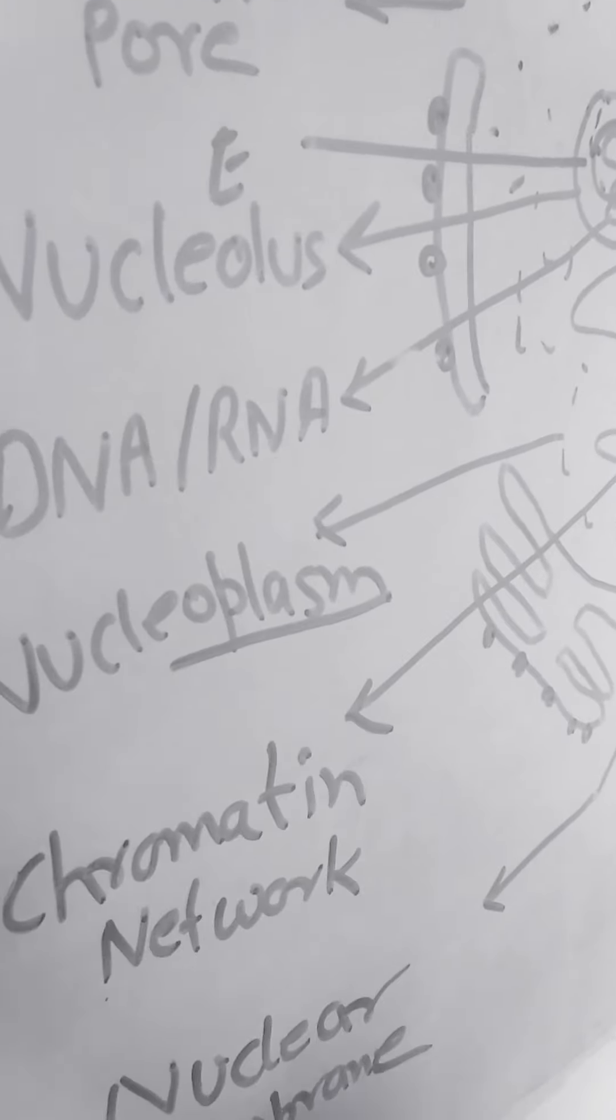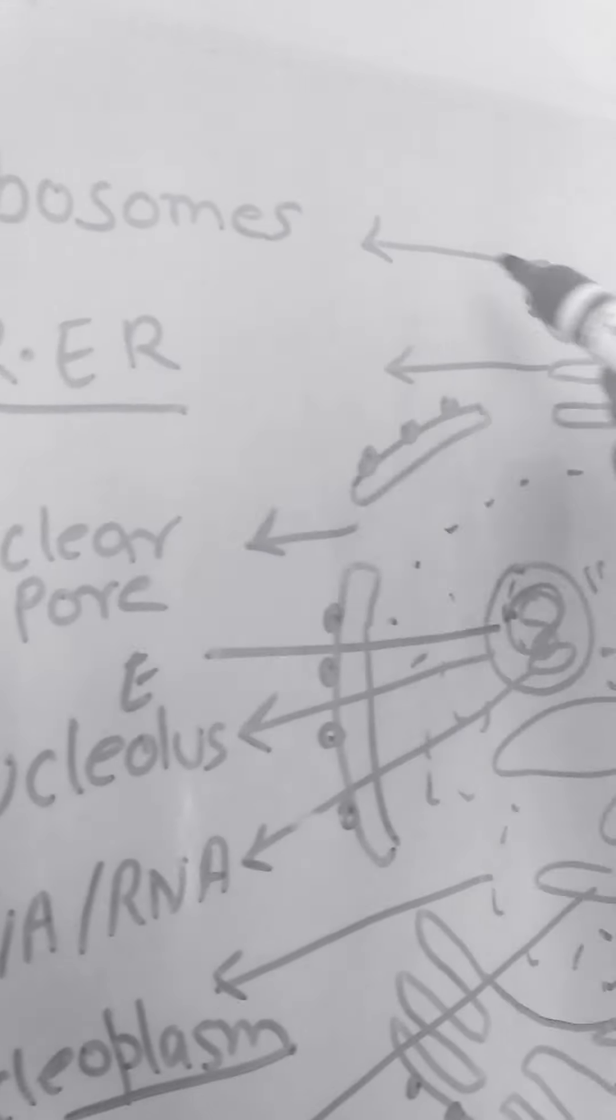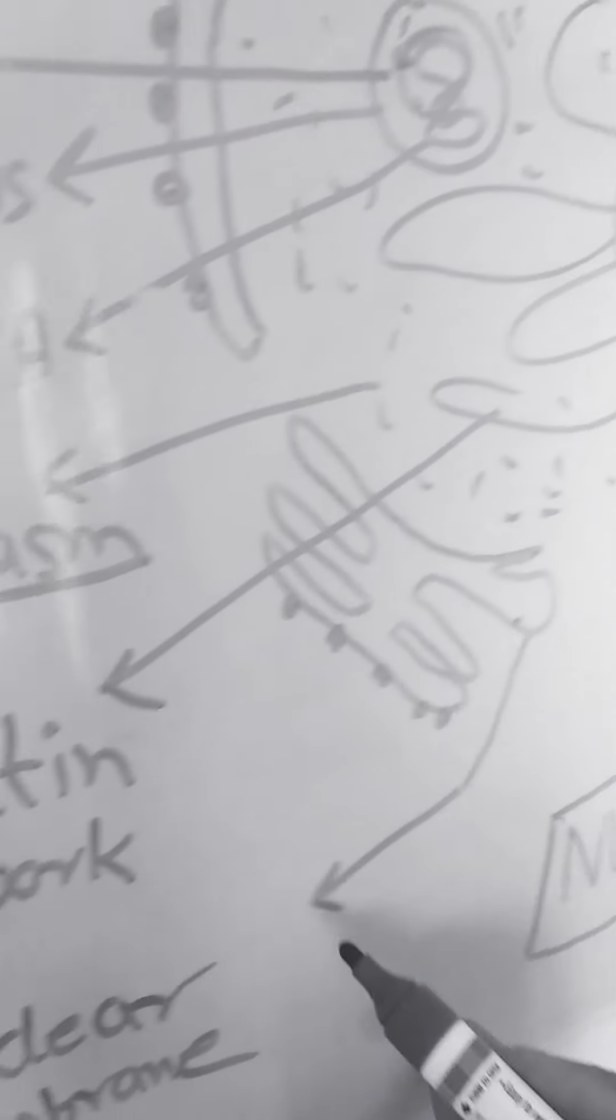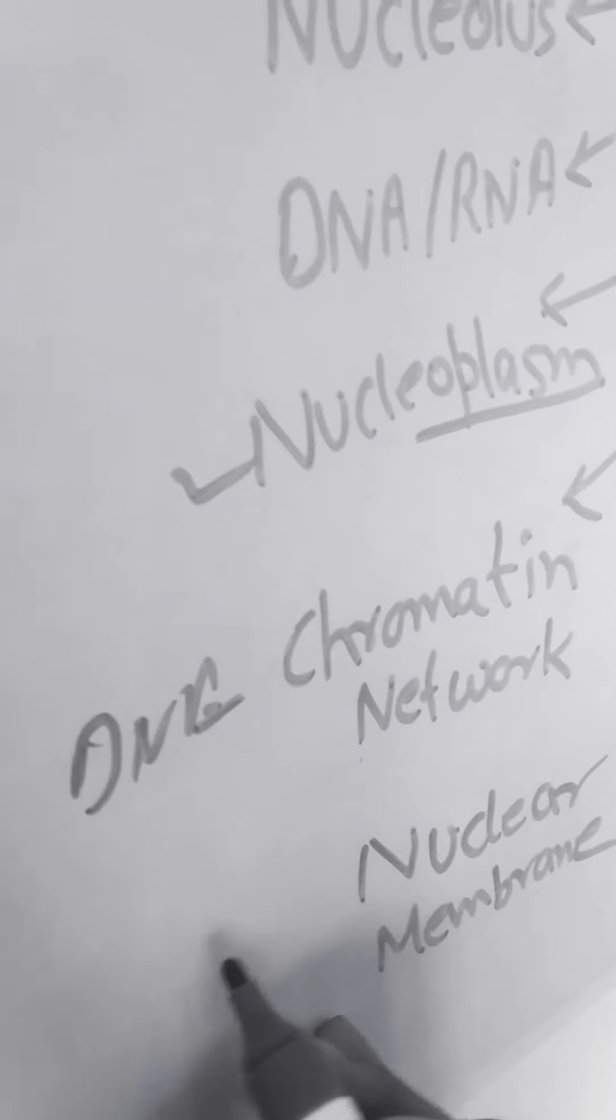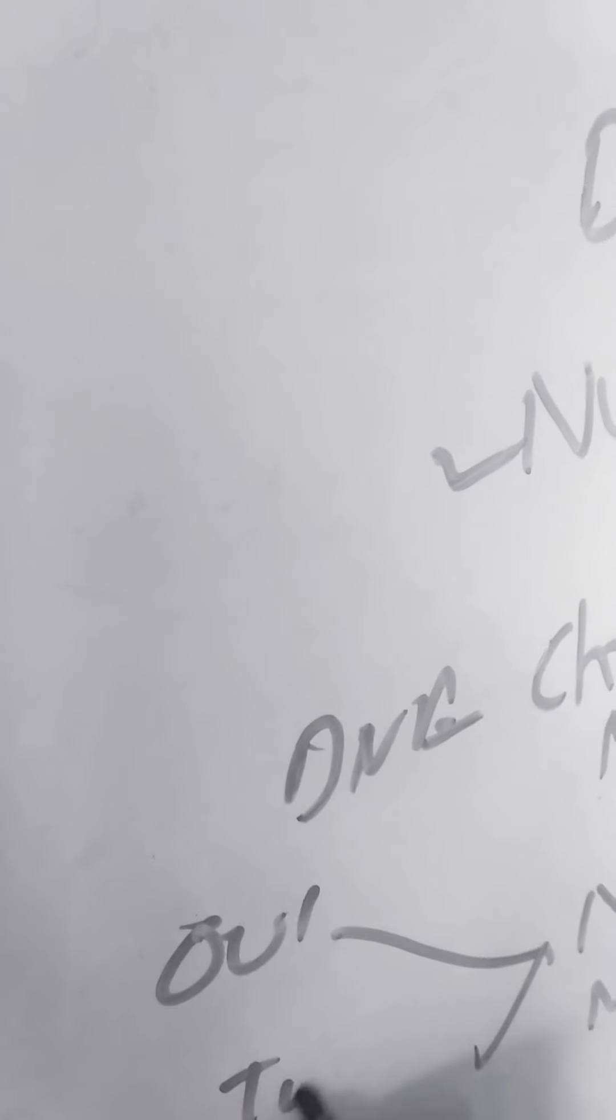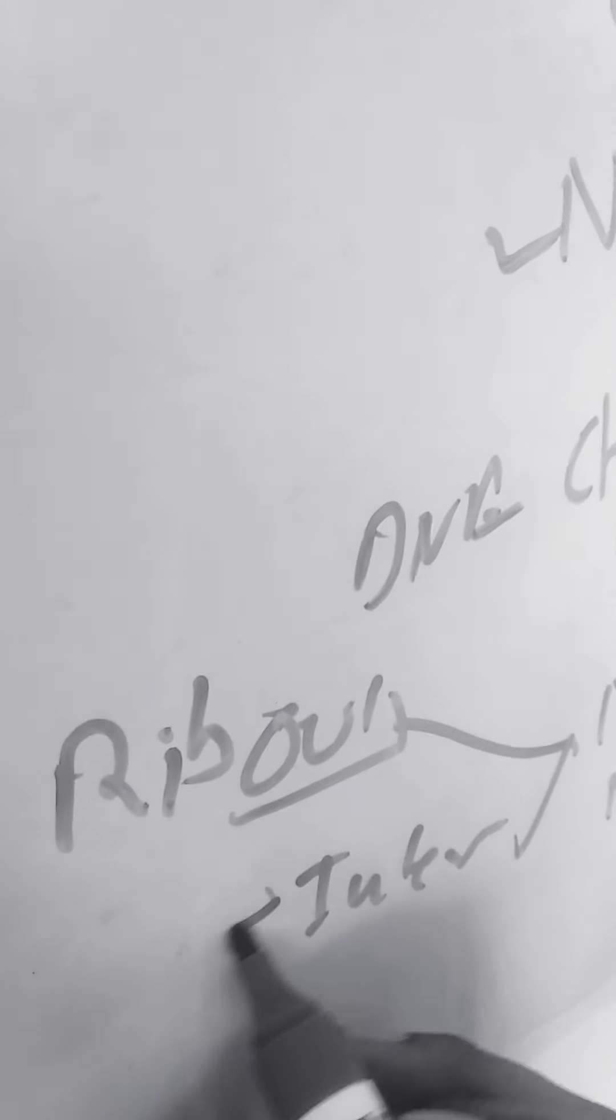Last one is nuclear membrane. This is very interesting. At the start I talked about ribosomes situated on the nuclear membrane. Nuclear membrane is actually of two types - outer membrane and inner membrane. Outer membrane is mostly rough because of ribosomes, whereas inner membrane does not contain ribosomes, so it is mostly smooth.